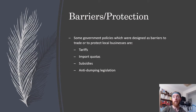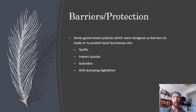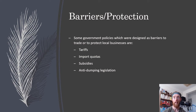Some barriers or protection that exist prevent globalization from occurring. Countries put these in place to try and protect their local businesses. Things like tariffs — tariffs are just a tax on selling a good or service. A good example: China put a 150% tariff on our barley exports after our Prime Minister accused them of a cyber hacking incident. So anyone in China wanting to buy Australian barley had to pay a ridiculous amount extra, which hurt local business. There are also import quotas, which limit the amount of a certain good or service from being imported into a country to protect local producers.